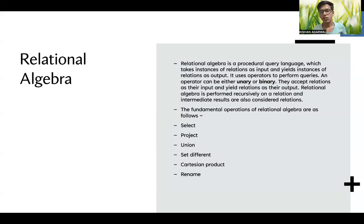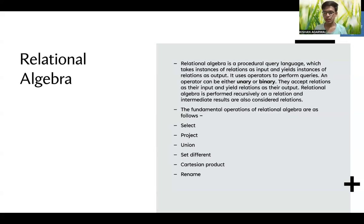Relational algebra is performed recursively on relations, and intermediate results are also considered as relations. The fundamental operations of relational algebra are: select, project, union, intersection, set difference, Cartesian product, and rename. These are the main fundamental operations in relational algebra.